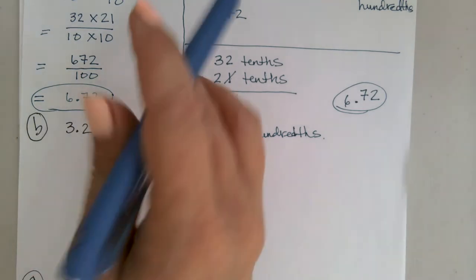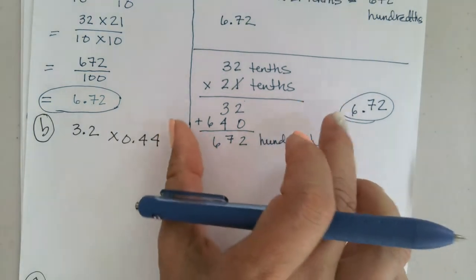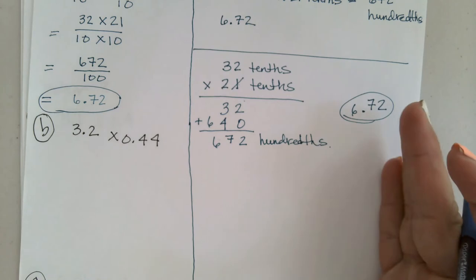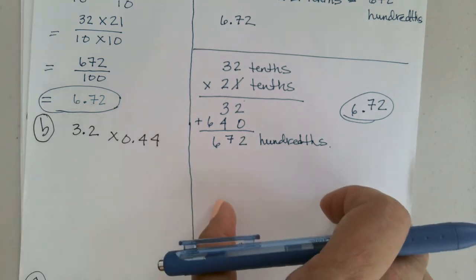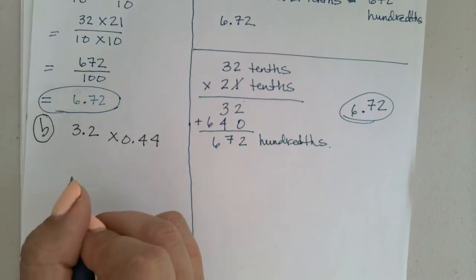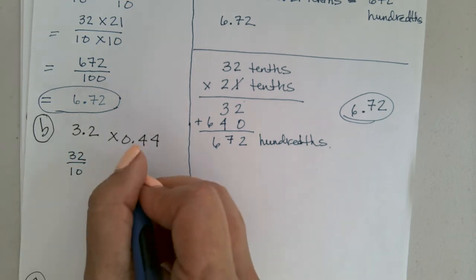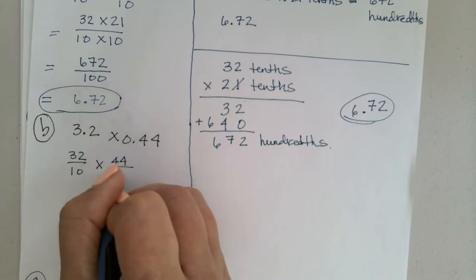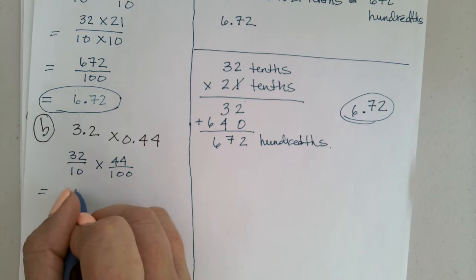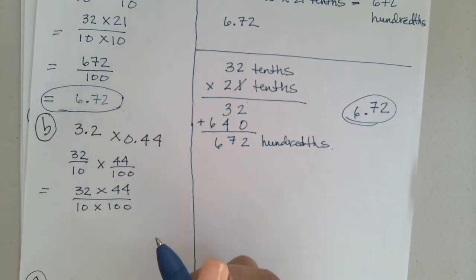I want you to use this strategy to solve. We're relating fractions to decimals. 3.2 becomes 32 tenths, and 0.44 is 44 hundredths. So: 32 times 44 over 10 times 100. You don't have to do this extra step if you don't need to — I'm just trying to make sure it's clear. 44 times 32 is actually 1,408.